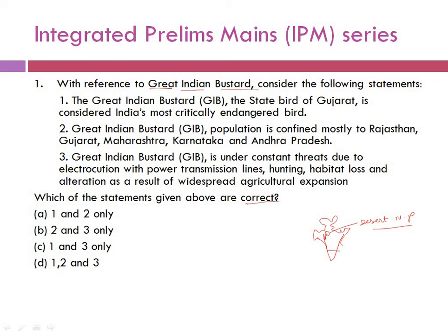To remember the distribution, you can visualize the shape of the letter L — starting from Rajasthan, come down to Gujarat, then Maharashtra, then take a right turn to Karnataka and then Andhra Pradesh. The Great Indian Bustard is under constant threat due to poaching and hunting, especially from the Pakistan side of the border where these birds have recently been found.